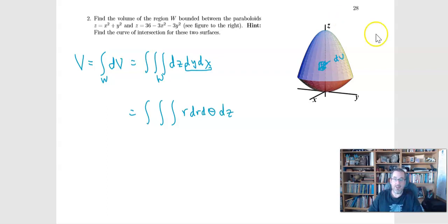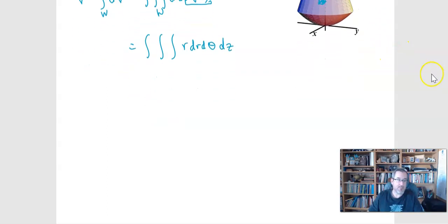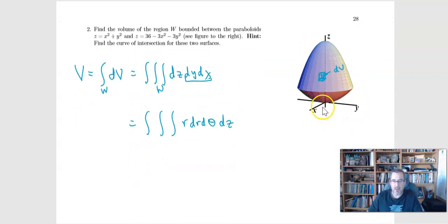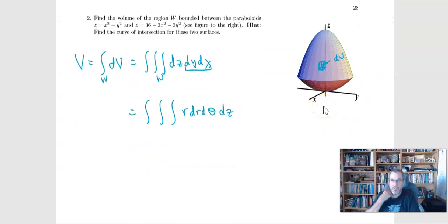Now also, we can do this in any order, because we're just multiplying things together, we can do DZ first, we can do DY first, we can do it however we want. Now because of the way our functions are defined,